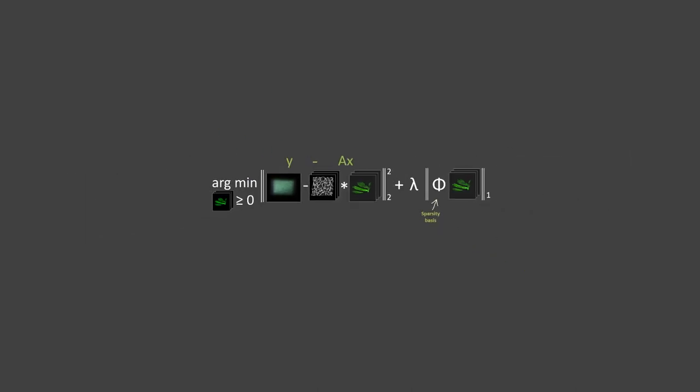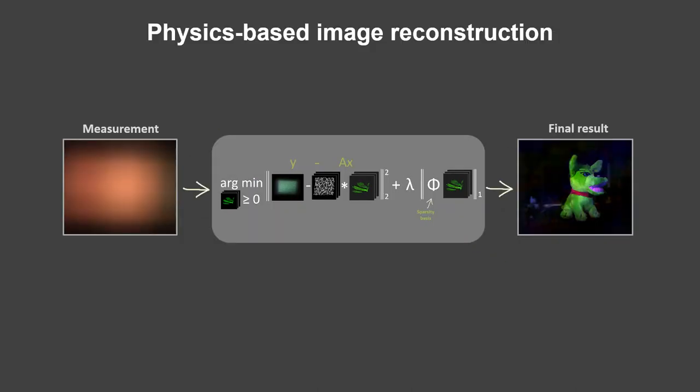I call it a physics-based approach or model-based image reconstruction because this A matrix here represents the forward model of the physics of light propagating through your system. That's really important in how this information gets used to solve for the reconstructed scene.